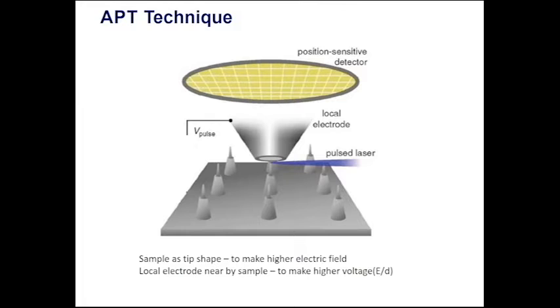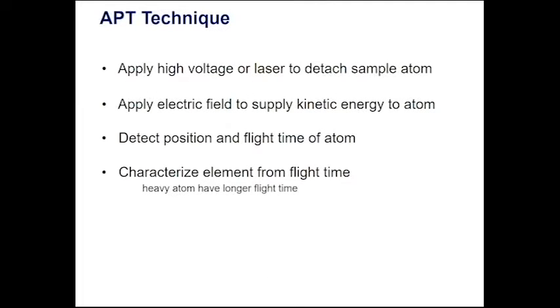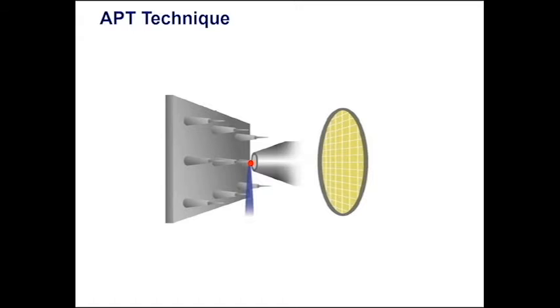Now how is this technique actually operated? First, the sample is cryogenically cooled down to 25 to 100 K and biased with high DC voltage ranging from 2 to 15 kV. By applying a pulse voltage or a laser pulse, one or more atoms are evaporated and ionized from the surface at the tip.